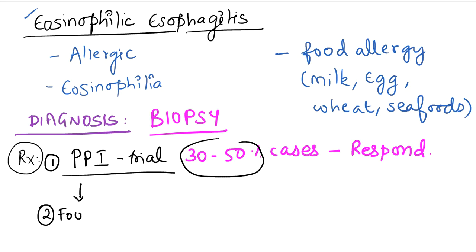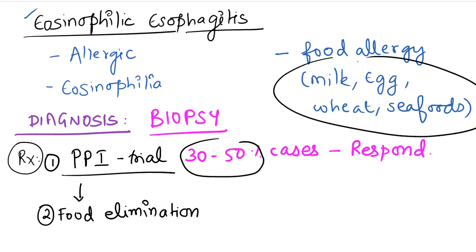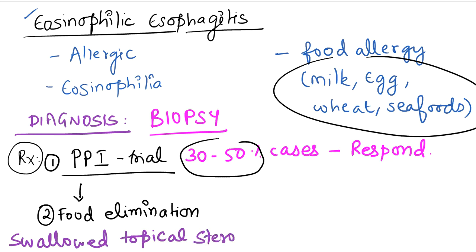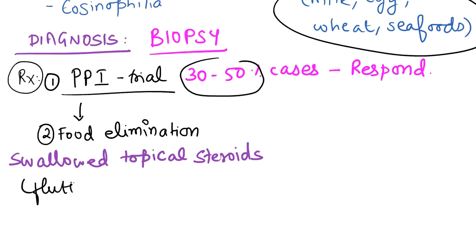If the patient does not respond to PPI, the second step is food elimination — avoiding the common allergens: milk, egg, wheat, and seafood — and monitoring for symptom improvement. At the same time, you can advise swallowed topical steroids. Topical steroids are applied externally but the patient swallows them so they act in the esophagus. The commonly used steroids are fluticasone and budesonide — these are the two used for eosinophilic esophagitis.